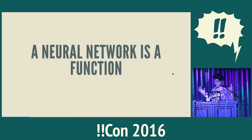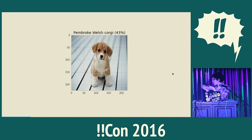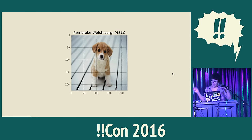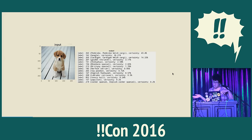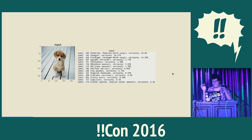A neural network — I was very confused about what it was, but it's a function. Here's a picture of a dog, and you can see that the neural network has identified this as a Pembroke Welsh Corgi with probability 43%. So it is something which takes dogs and gives you labels, like a probability. You take a dog and it gives you lots of probabilities — I think it's this kind of dog with probability 43%, I think it's a tennis ball with probability 0.24%. All of these are dogs except for tennis ball.